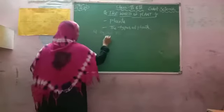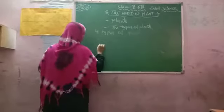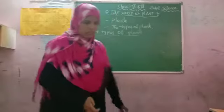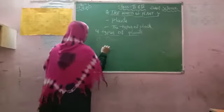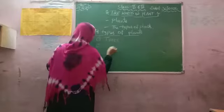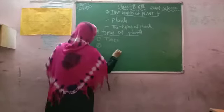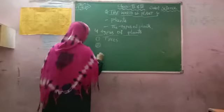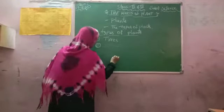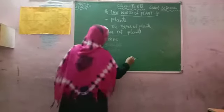The four types of plants are: first one is trees, second one is shrubs, third one is herbs, and last one is climbers and creepers.